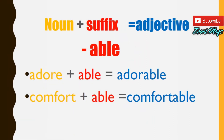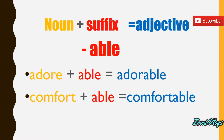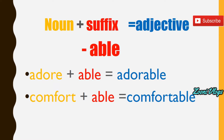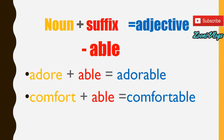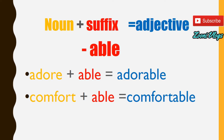Suffixes are not like prefixes in English, because when we use a prefix with an adjective, we usually get a negative adjective — but suffixes don't work that way. The pattern here is: noun plus suffix equals adjective. The first suffix is '-able,' spelled A-B-L-E. For example, 'adore' plus '-able' equals 'adorable,' and 'comfort' plus '-able' equals 'comfortable.'